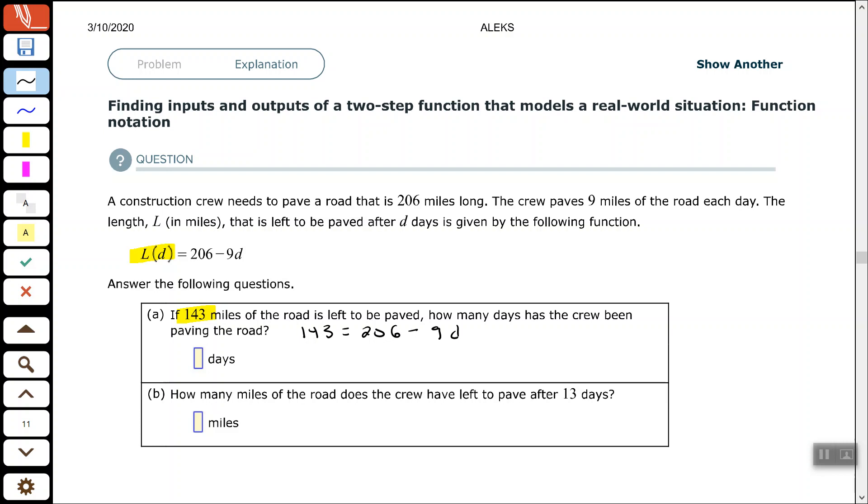So the first thing we need to do to isolate D, we want to subtract 206 from each side. So that gives us negative 63 equals negative 9 times D.